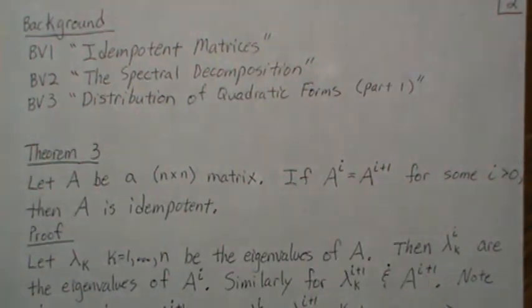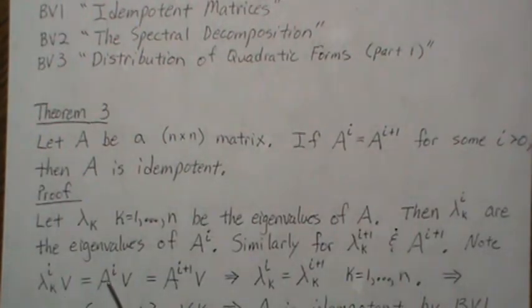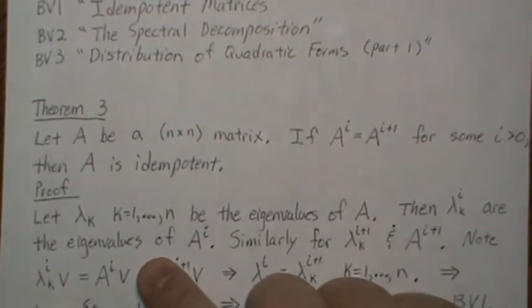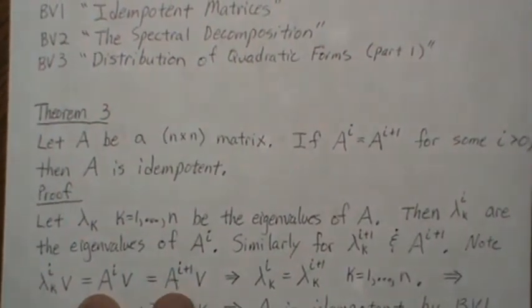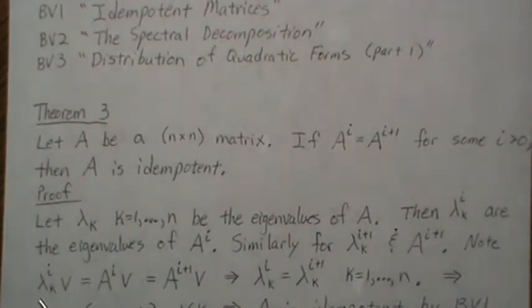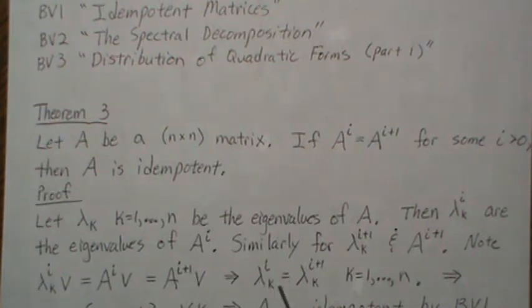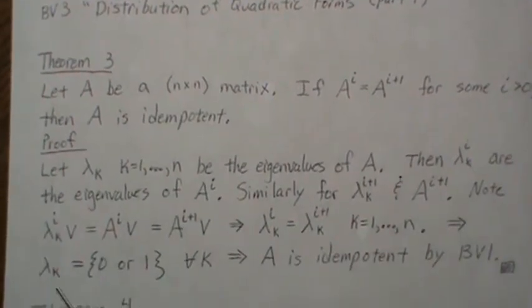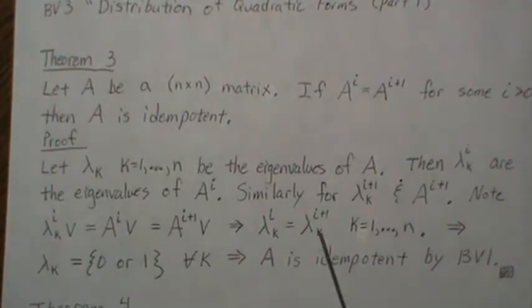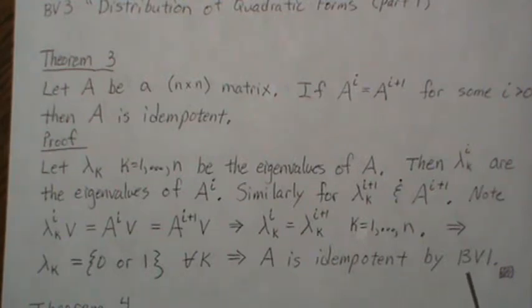Note that lambda^i * v = A^i * v, by the definition of an eigenvalue. Because of our assumption, A^i = A^(i+1), so the eigenvalues of A^i are the same as the eigenvalues of A^(i+1), implying lambda^i = lambda^(i+1). The only way this can hold for all k is if the eigenvalues are zero or one. Since all eigenvalues are zero or one, A is idempotent, by background video one.